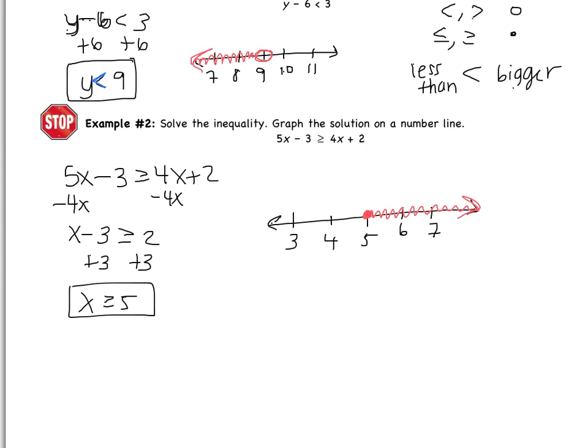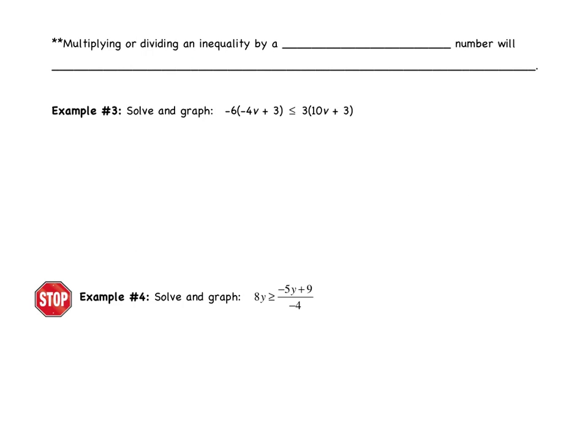We do have a few more examples and another note to take, so flip the page please. Multiplying or dividing an inequality by a negative number will flip the inequality — meaning flip the direction. So if it's less than, it'll become greater than. Let's look at the next example.